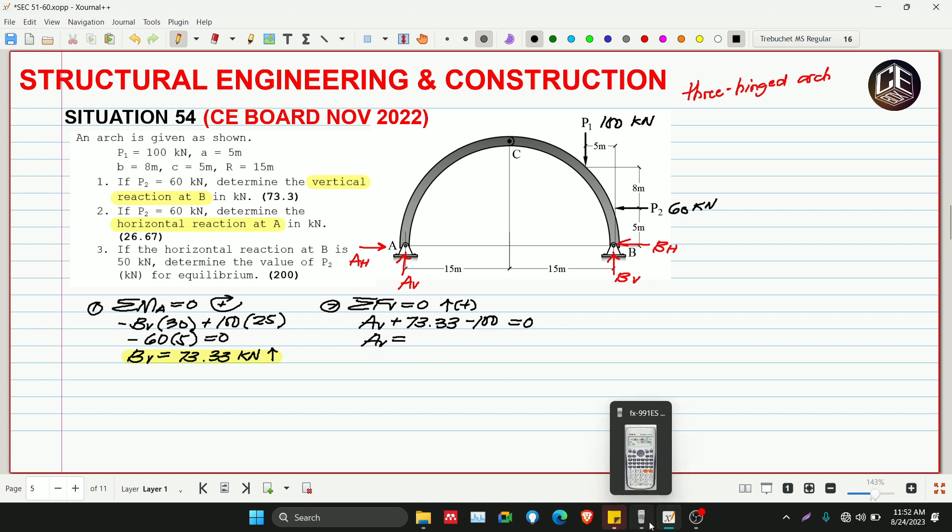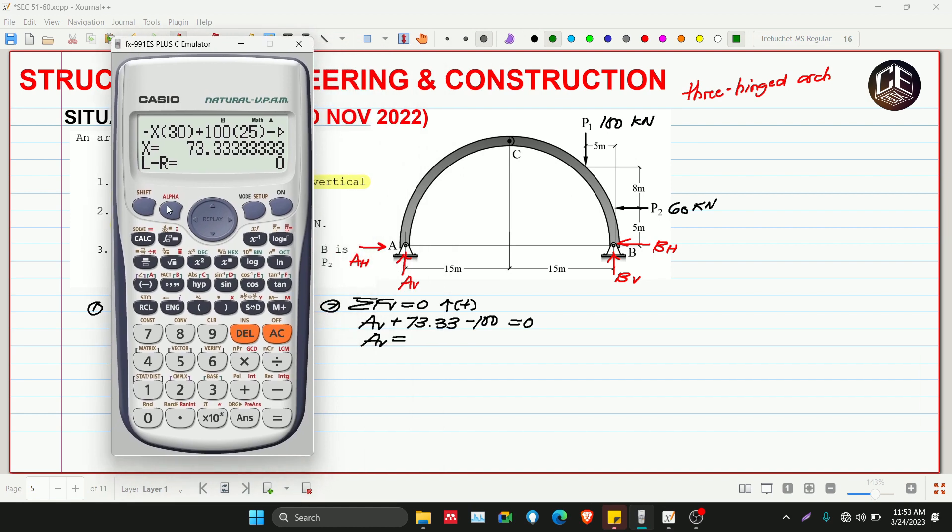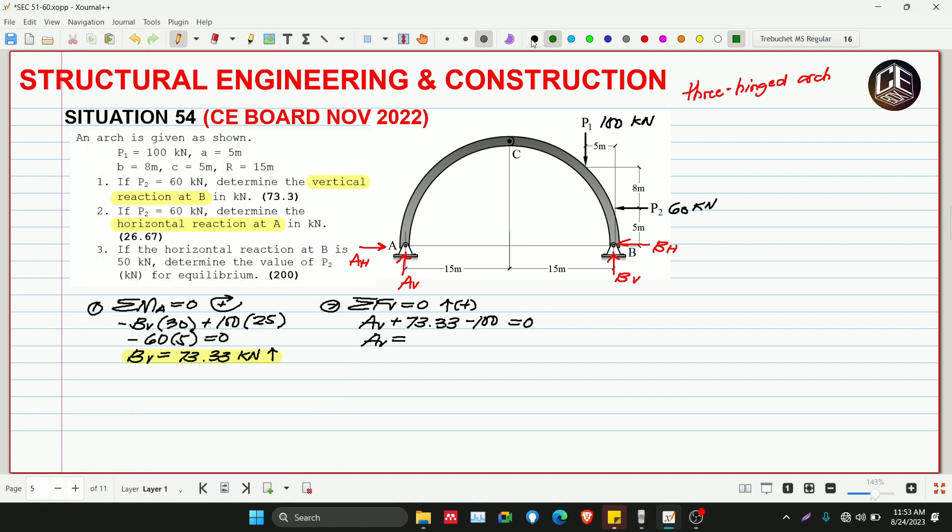This problem is really easy. I noticed that board exams like 3-hinge arch problems. If I were to give a problem like this, I'd make it inclined. We have problems like that in our 50 problems playlist. Those are trickier, but this one is very straightforward. So AV equals 73.33 minus 100, which gives us negative 26, transpose to positive, so 26.67 kilonewtons upward since it's positive.